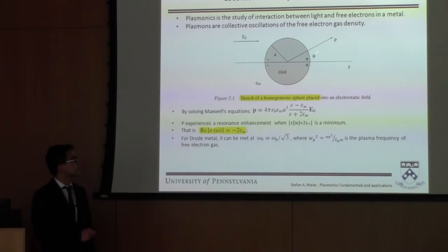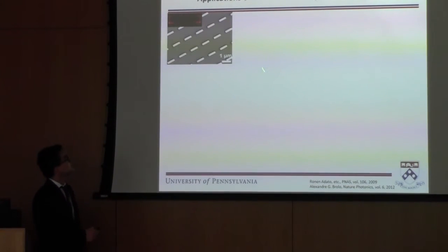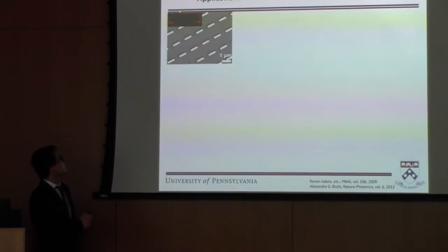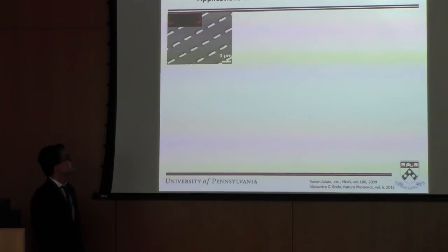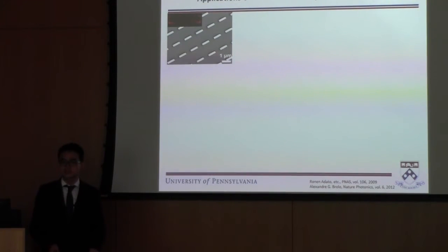These accumulated charges generate a very strong electrical field around this structure. From this figure, which is a simulation of the electrical field around these nano-antennas, the brightness shows how strong the electrical field is. We can see around the edges the electrical field becomes very strong when light is incident onto this sample. People are very interested in this behavior because it can be used to enhance signals that we currently cannot detect with existing technology.